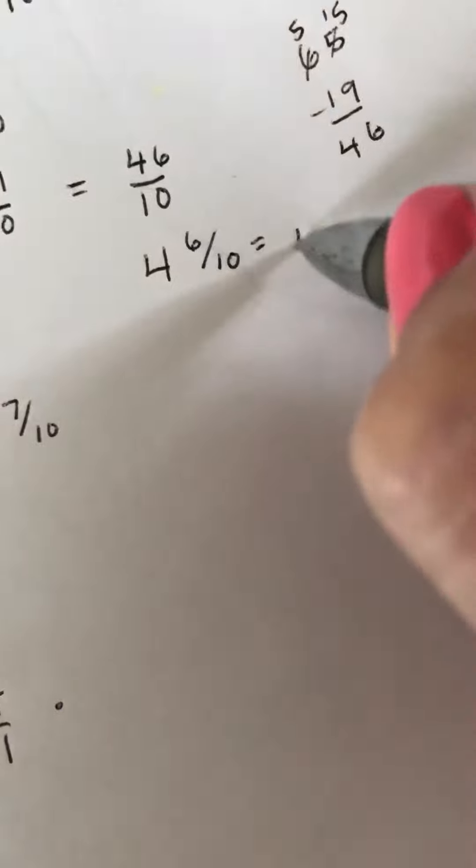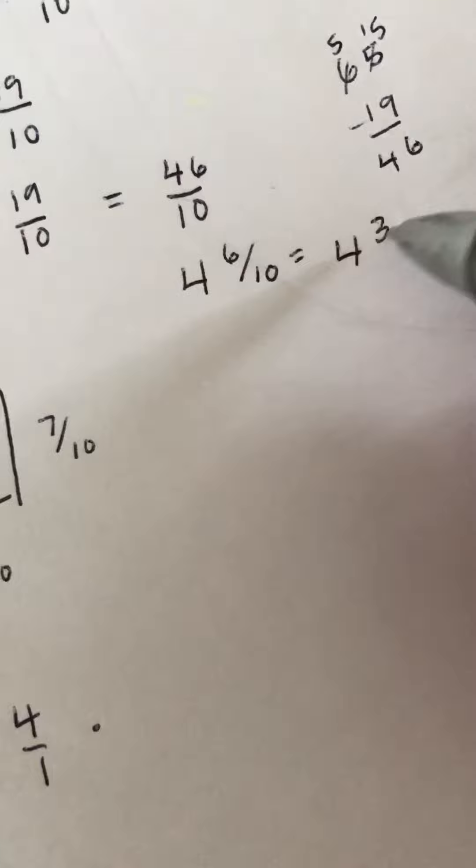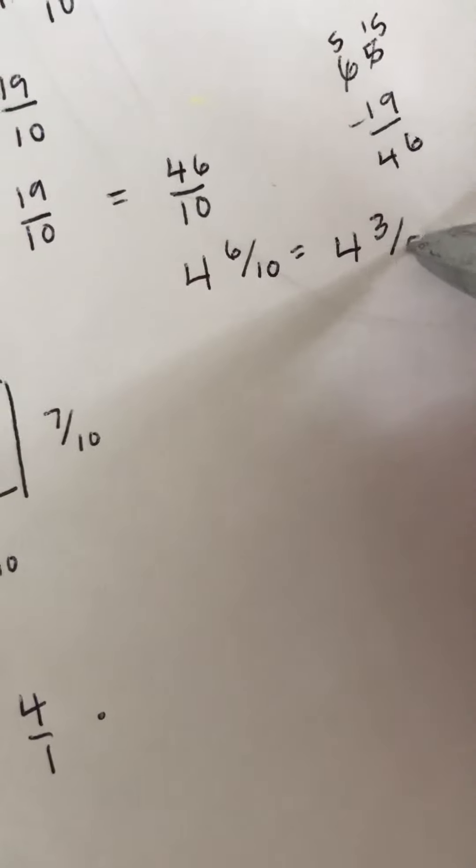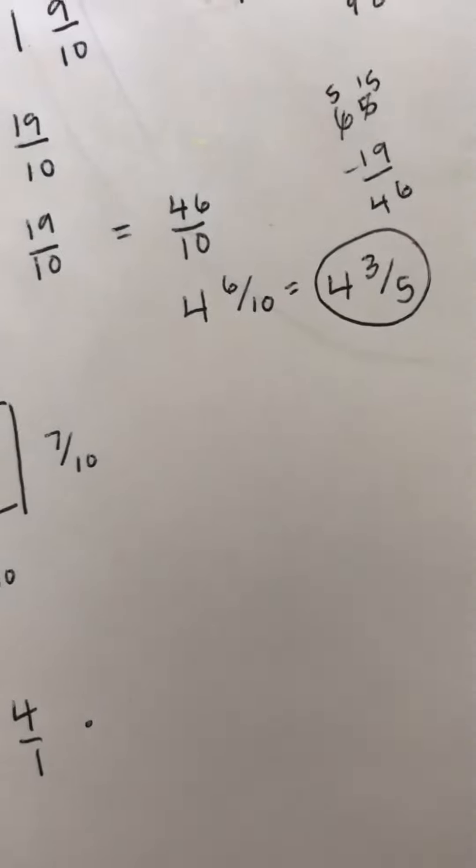Now 6 and 10 are both even, which means that that's not simplified. They're both multiples of 2. 6 divided by 2 is 3. And 10 divided by 2 is 5. 4 and 3 fifths for number 8.